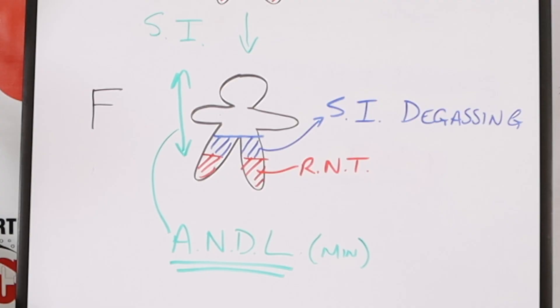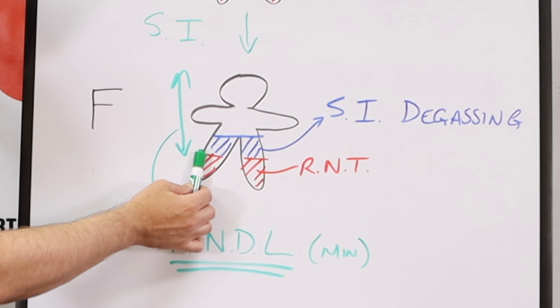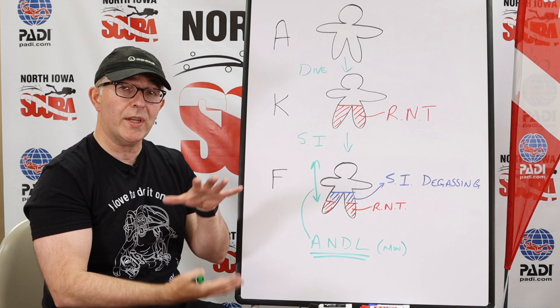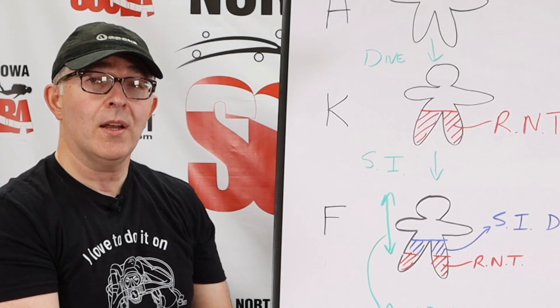Your adjusted non-decompression limit is how much time in minutes you have from the top of your residual nitrogen time all the way to the top — how much additional time would you have to reload? So let's do an example to show you how that works.